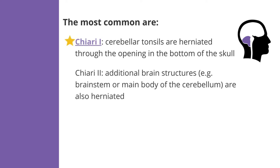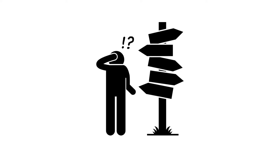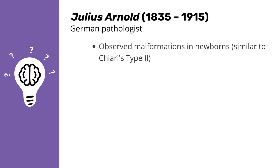Chiari 2, where additional brain structures such as the brain stem or main body of the cerebellum, are also herniated. Today, most people use Chiari 2 to refer to cases that coincide with spina bifida. Although these definitions appear simple at first, the history of Chiari, especially for Chiari 1, is full of confusion and disagreement.